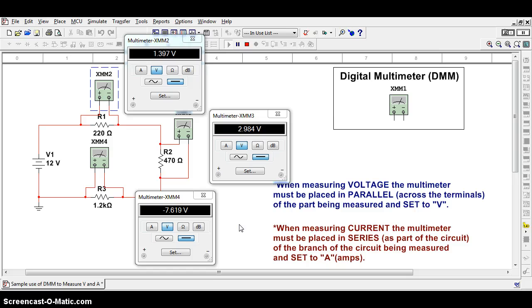The only reason this value is negative is because we think of conventional current in a certain direction. Notice that the positive-negative connections here on your actual meter are reversed compared to the other circuits as well.